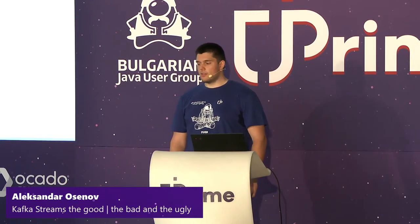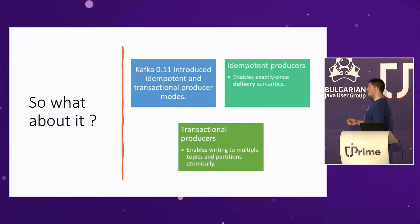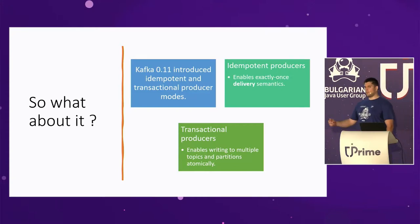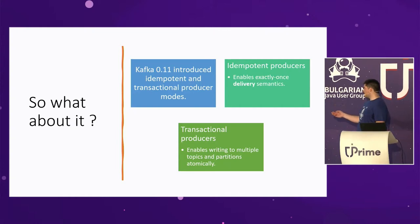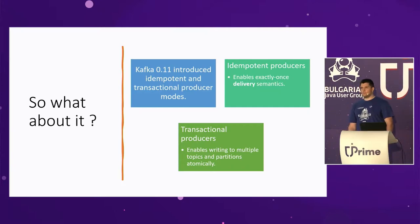Since Kafka 1.1, the producers have been overloaded with some additional functionality. We have two new producer modes — and don't get me wrong, these are not subclasses. It's actually the same class we've been using for so long. Since Kafka 3, the idempotent producer will be enabled by default. Out of the box, we also get the transactional producer, which enables us to write atomically to multiple topics and partitions, whereas the idempotent producer enables exactly-once delivery.